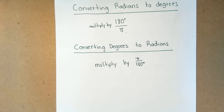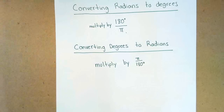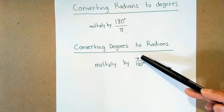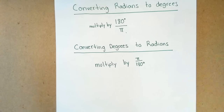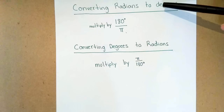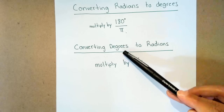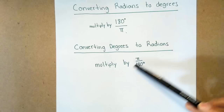So how do you go from radians to degrees or degrees to radians? The only thing you have to memorize is that you're going to be multiplying by either 180 over pi or pi over 180. The reason is that in trigonometry, pi means 180, and usually when something's in terms of pi, it's in radians. So if it's in radians and you're trying to get to degrees, multiply by 180 over pi. If it's in degrees and you're going to radians, multiply by pi over 180.